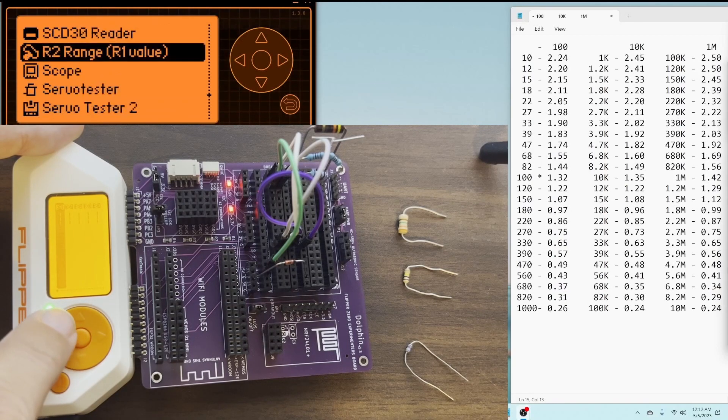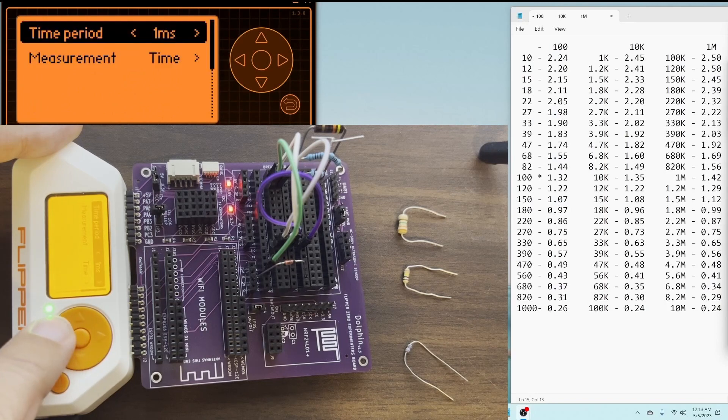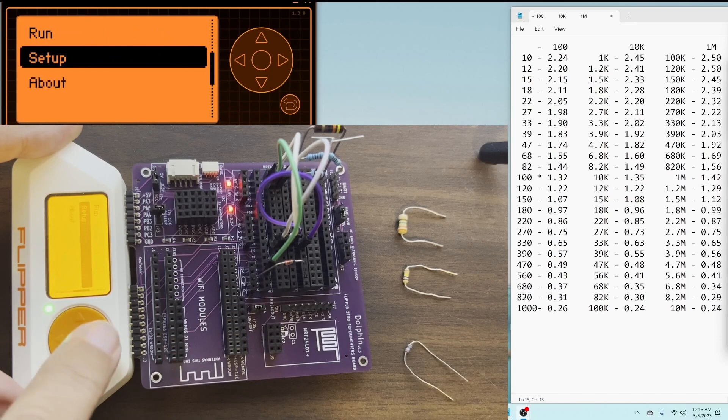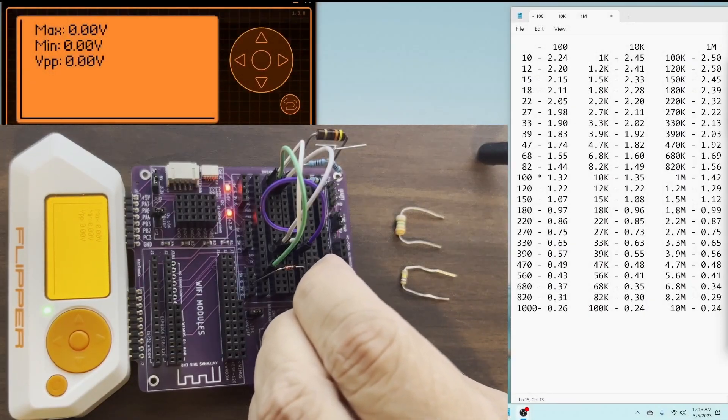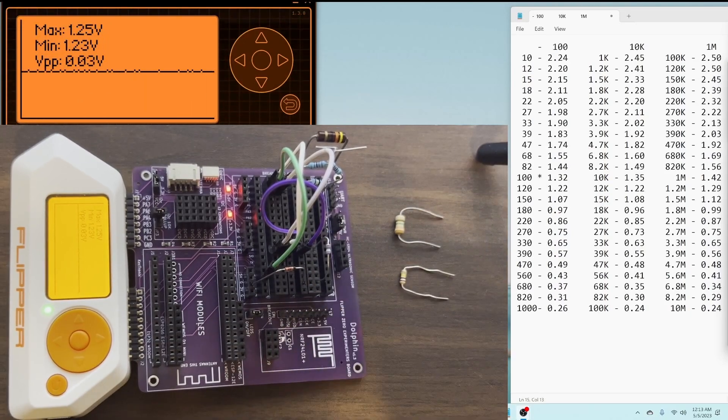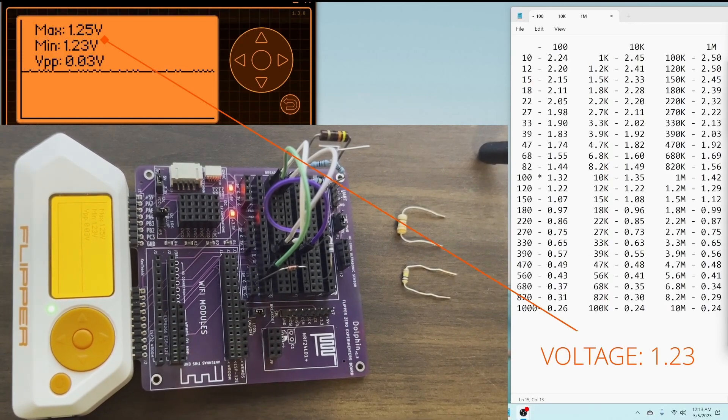Hopefully now you understand how we're able to use Ohm's law and Kirchhoff's current and voltage laws to determine what the unknown resistor is by measuring the voltage across the resistance and knowing what the known resistor is. If you have any questions or comments please leave them below and if you enjoyed this video please like and subscribe.